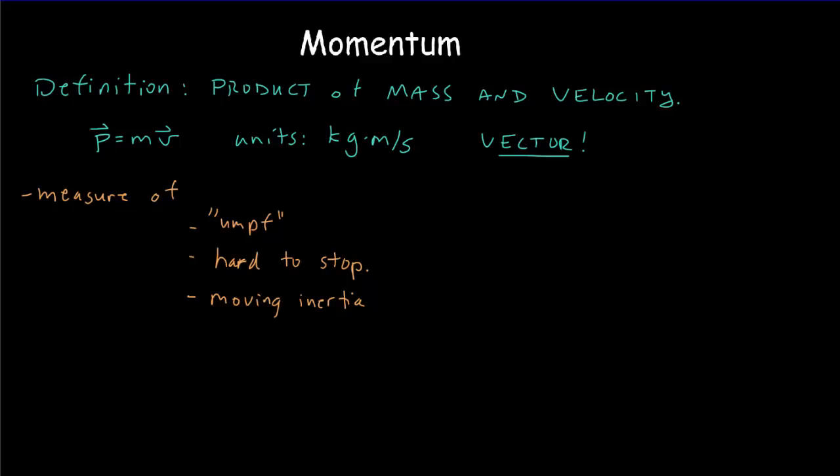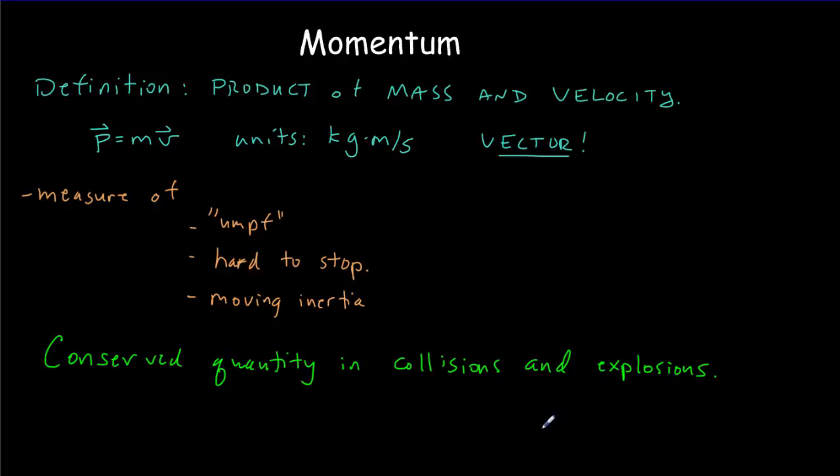We sometimes use the word momentum in everyday situations — a basketball team having a lot of momentum means they've scored a lot of points in a row, they're on a streak and they're difficult to stop. We like momentum because it's a conserved quantity, at least in collisions and explosions. So in the same way that we have a law of conservation of energy, we also have a law of conservation of momentum, and that's going to be a very useful tool.